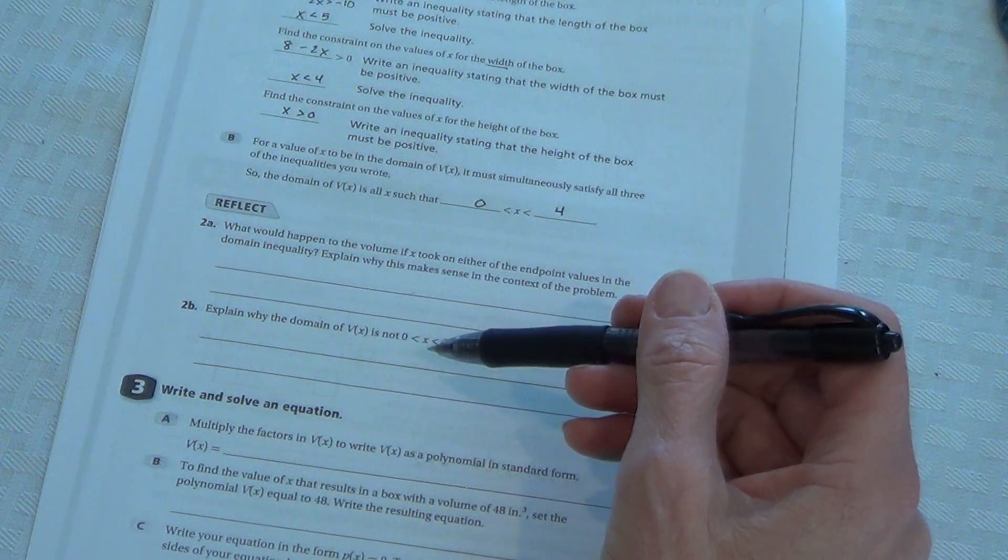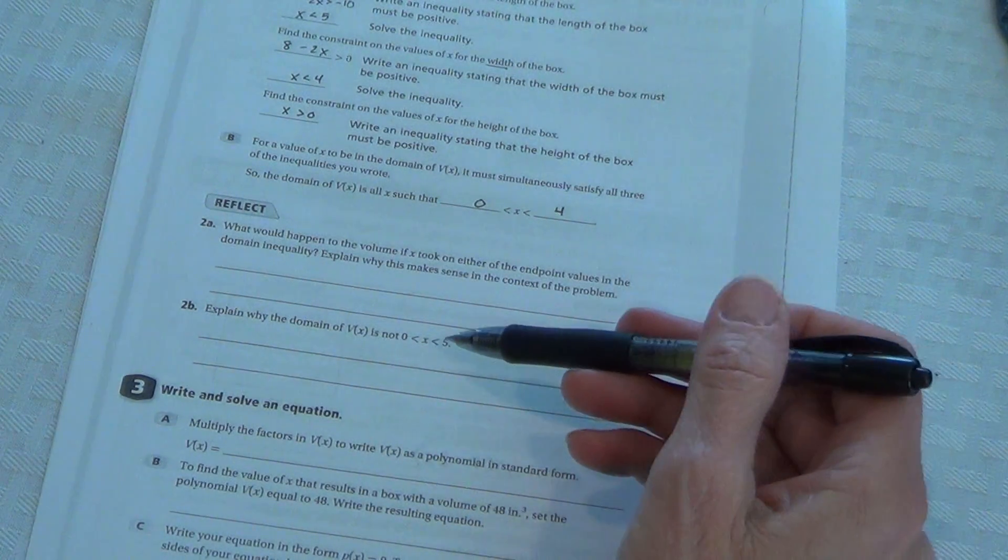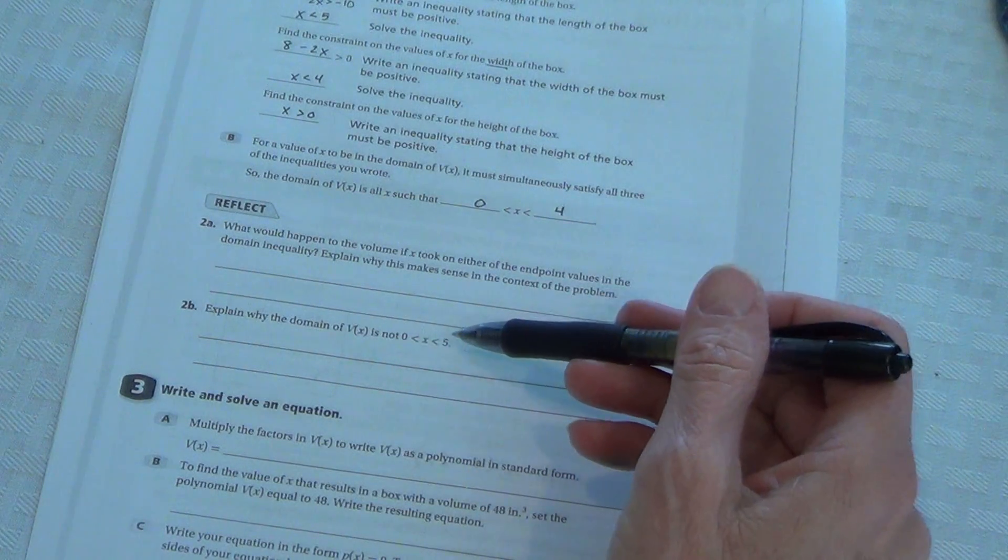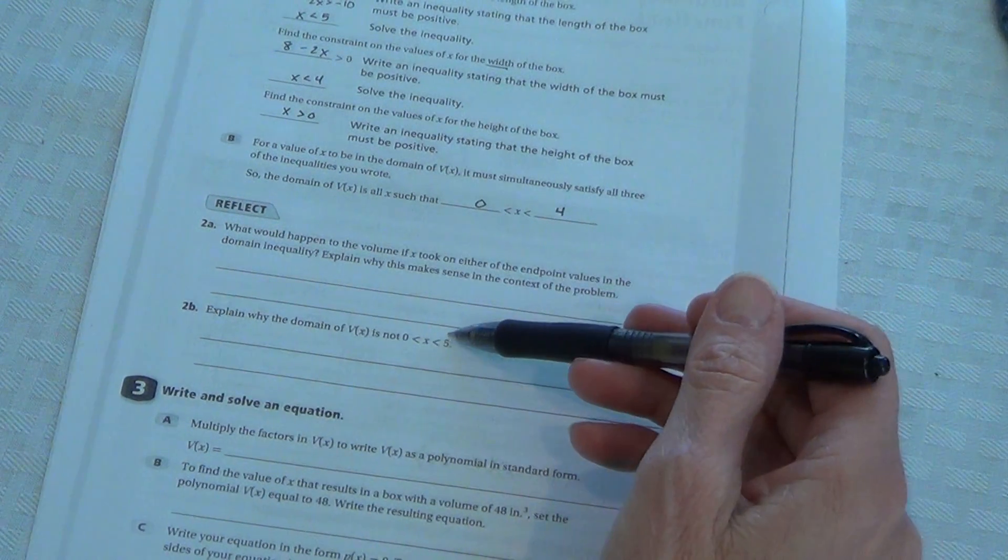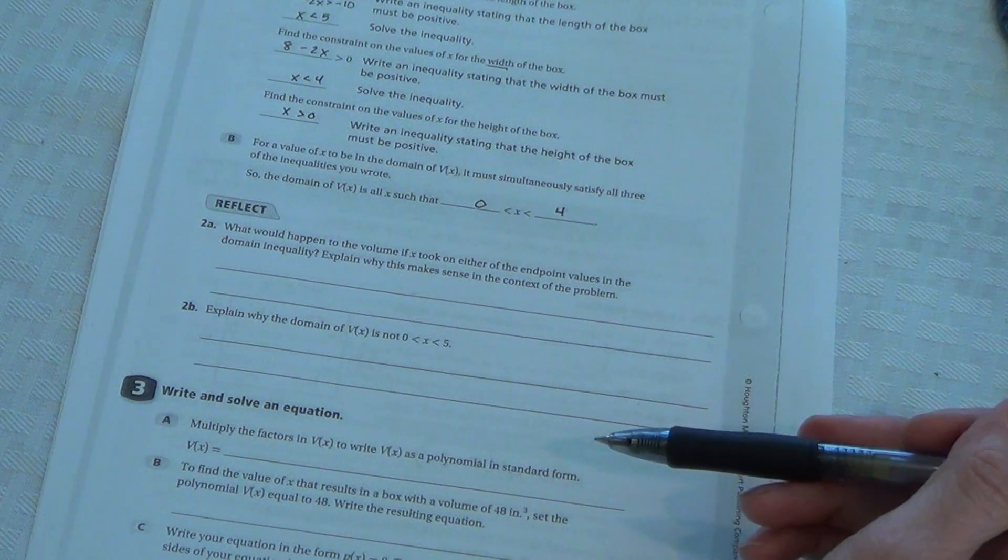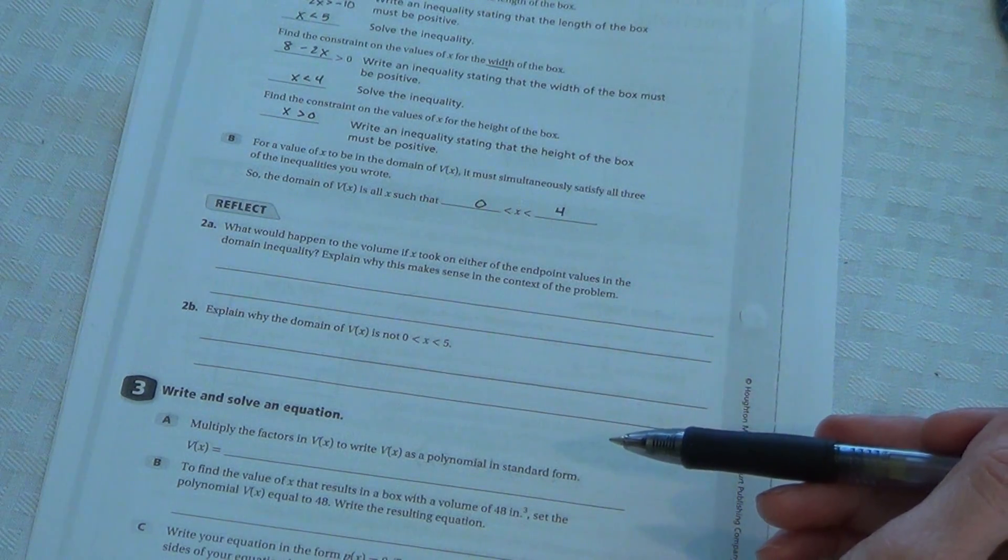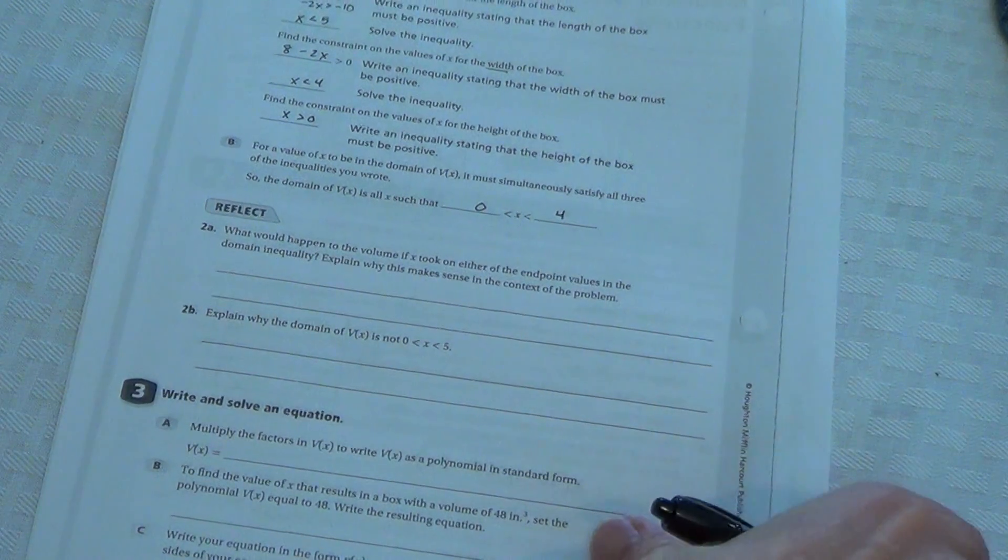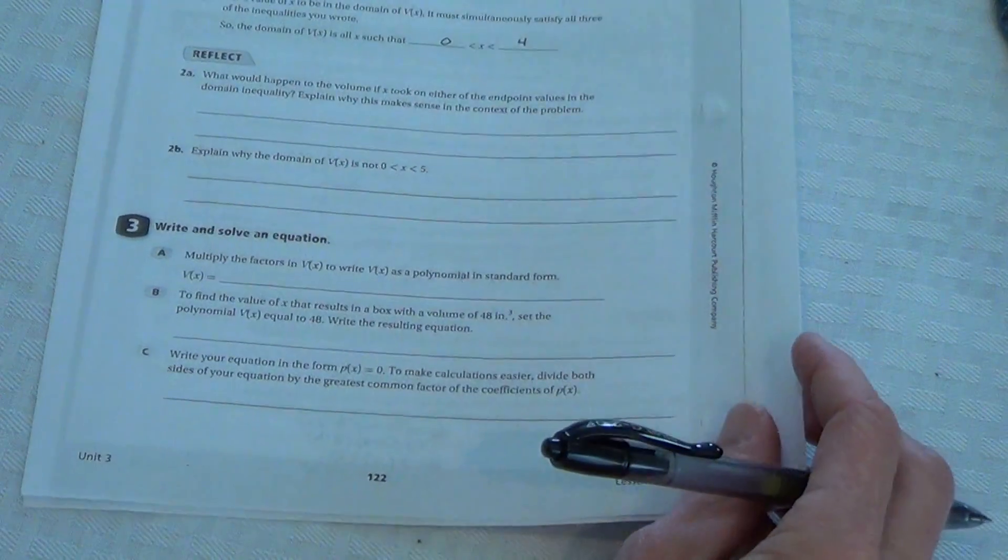And there would be no width left because your 8 has been completely eliminated by 4 and 4 on each side. Okay? So you want to explain that in your own words here. Draw it out if you need to. Explain why the domain F of x is not 0 or x is greater than 0 and less than 5. And that again is in regards to that 5 being so big that you can't get a 5 for your height out of a side where it's 8 inches total.